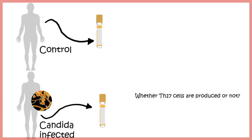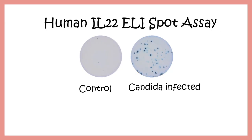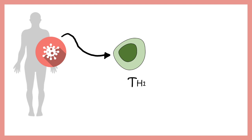As an example, consider two individuals — one infected with Candida and one not infected. We want to determine whether Th17 cells are produced. Since Th17 cells produce IL-22 cytokine, we perform an IL-22 ELISPOT assay. The wells are coated with an IL-22 antibody to detect IL-22 in the sample. Results show that the Candida-infected individual's sample has a high number of spots, confirming that cells producing IL-22 cytokines are indeed present in that sample.